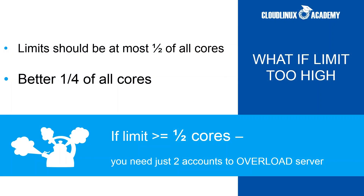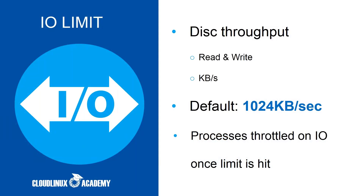Limits should be no more than half of all cores, and it is much better to keep one quarter of all cores as the maximum speed limit for high-end accounts. If limits are higher than half of all cores, you only need two accounts to overload a server.